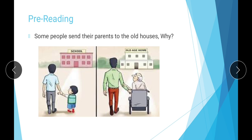This convention of sending old parents to an old house is not as common in eastern countries, especially in Pakistan. Here we have strong family relationships — sister, brother, mother, father, grandfather, and grandmother are all considered important. There is a strong bond between them and they take care of their parents, though there are a few examples where old parents are sent away from home.